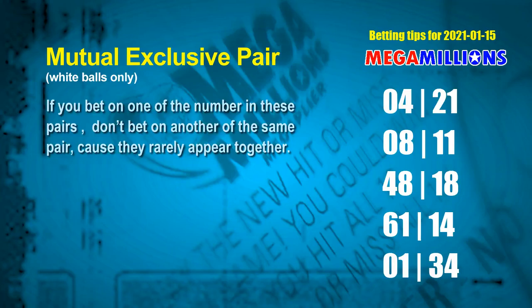Here are some tips to increase your hit odds. Mutually exclusive pairs: these numbers both match the following ones rule, but according to hundreds of results, they rarely appear together. If you bet on one, don't bet the other in the same pair. The white ball mutually exclusive pairs for next draw are: 04 & 21, 08 & 11, 48 & 18, 61 & 14, and 01 & 34.